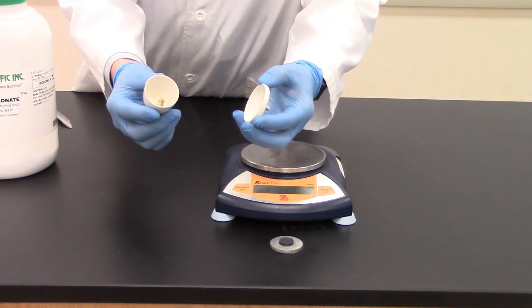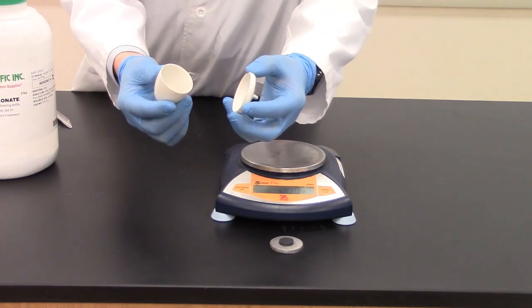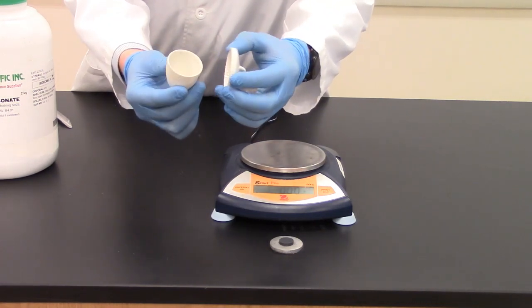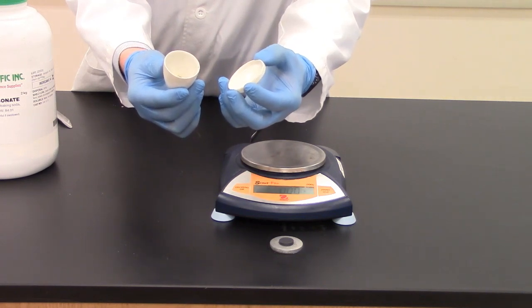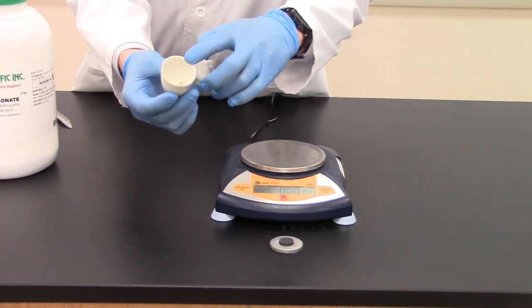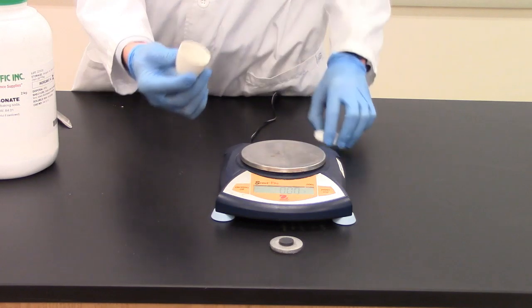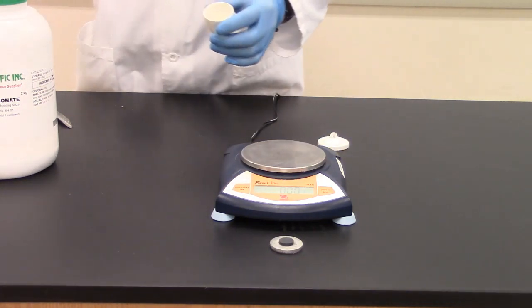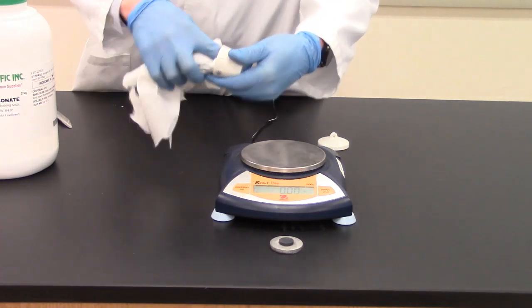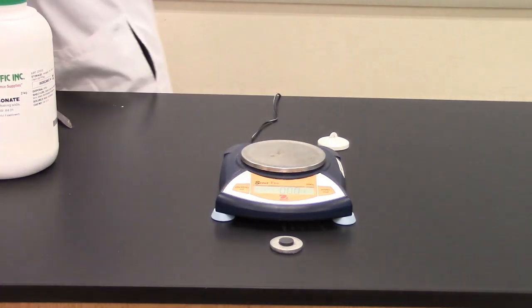So we're going to be working with a crucible. This is the container that we're going to be heating with the Bunsen burner. The crucible is a porcelain container to withstand high temperatures and what we want to do first is take a paper towel over the sink and wipe out any residue on the inside. So I'm going to go ahead and do that over the sink, get it as clean as possible.